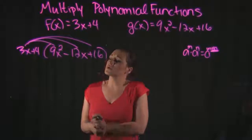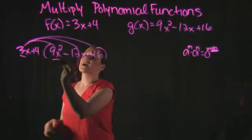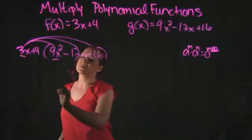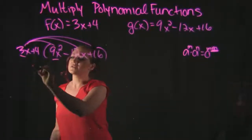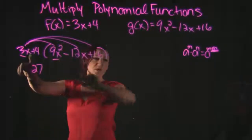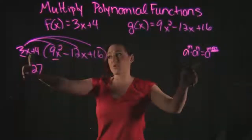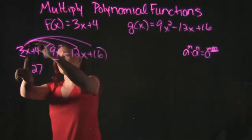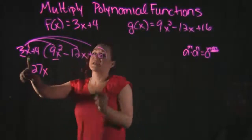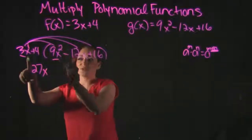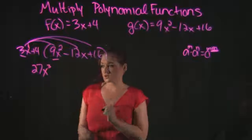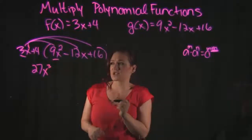Starting with 3x: 3x times 9x — 3 times 9 gives us 27. And x times x squared — remember that's the product rule — you keep the base and add the exponents: 1 plus 2 gives us 3. So that gives us 27x cubed.